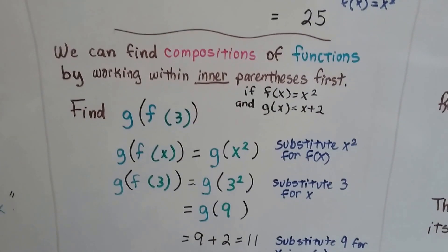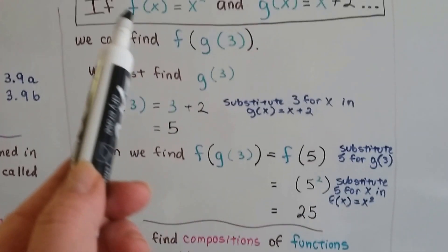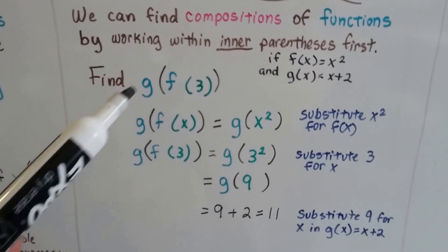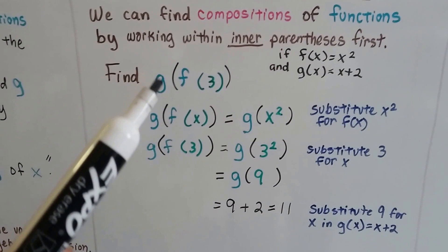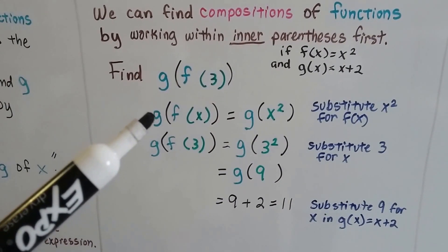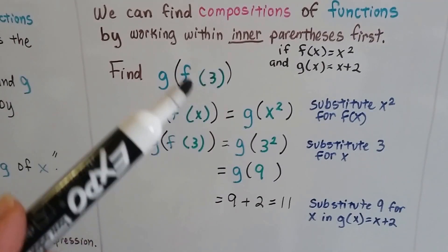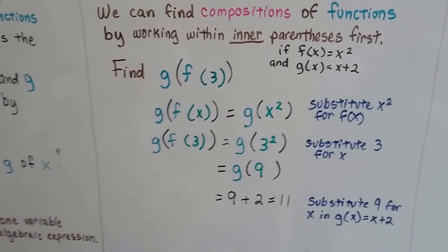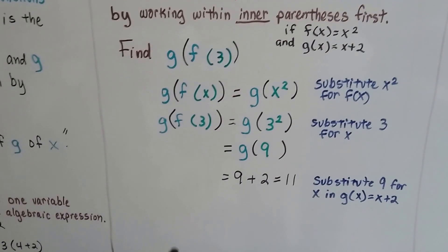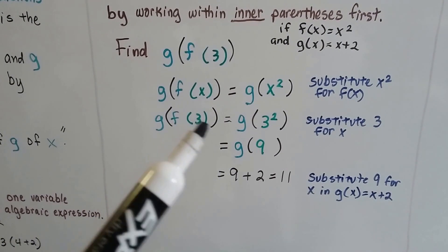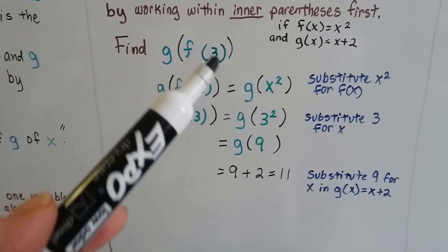Now we can find compositions of functions by working within inner parentheses first. Remember, we've got the function of x is x squared and the g of x is x plus 2. I just copied it from up here so we could have it down here in the screen. So now we're just going to do it and work inner parentheses first. So we're going to do function of f of 3 here first to find the function of g of f of 3. So now we have g of f of x and g is going to be x squared. Because if we have this, we can substitute the x squared for the f of x, because f of x is x squared. So we just substitute that in for f of x.